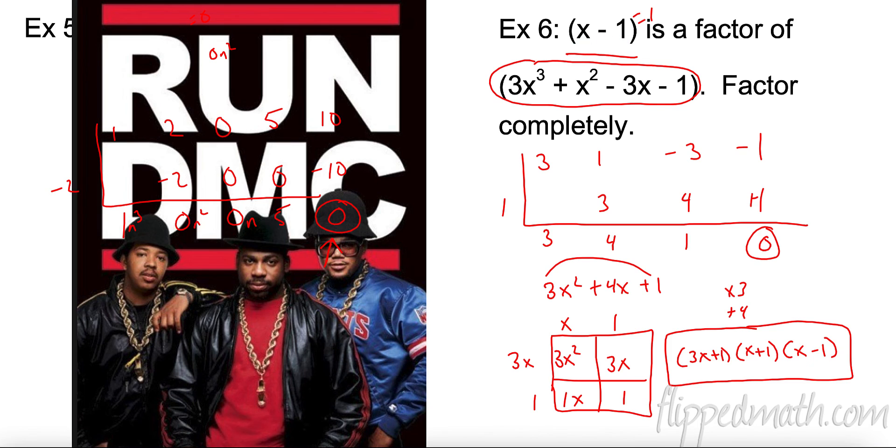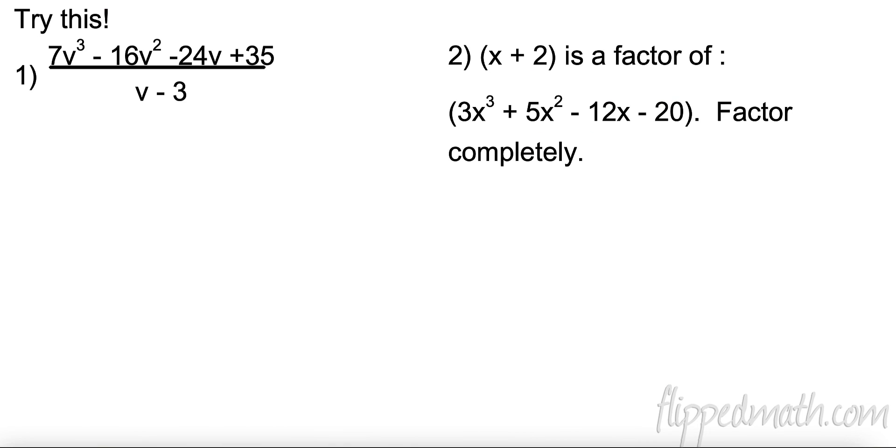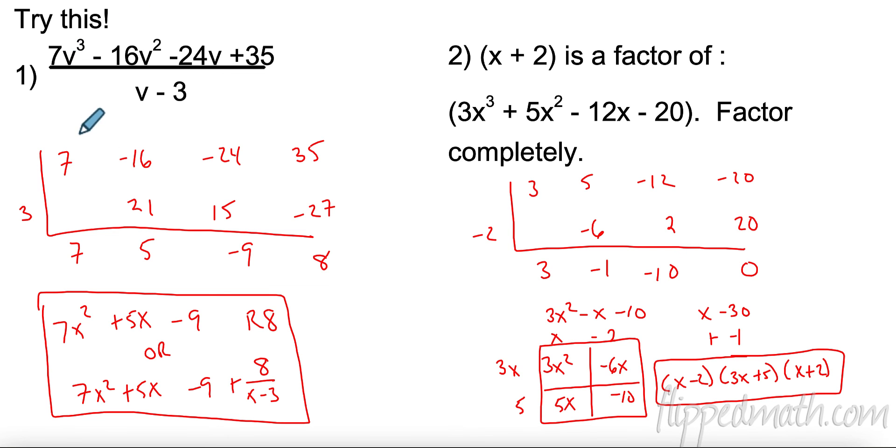All right. I think you guys are ready. I want you to try these on your own. See how it goes. All right. All right. Over here, I put my coefficients down. I add it down and multiply it up. I got a remainder of 8. So I wrote it as my favorite way is just writing R8. But of course, you could write 7x squared plus 5x minus 9 plus 8 over what I divided by originally, x minus 3, v minus 3.